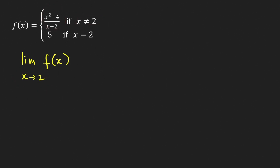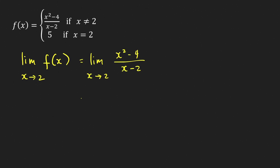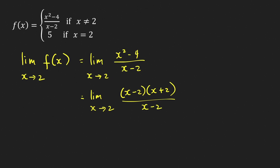This is the limit as x approaches 2 of (x² − 4)/(x − 2). The numerator limit is 0 and the denominator limit is 0, giving a 0/0 indeterminate form, which requires extra work. We factor the numerator as a difference of two squares: (x − 2)(x + 2) over (x − 2). Since x ≠ 2, we cancel the common factor (x − 2), leaving the limit of (x + 2) as x approaches 2.